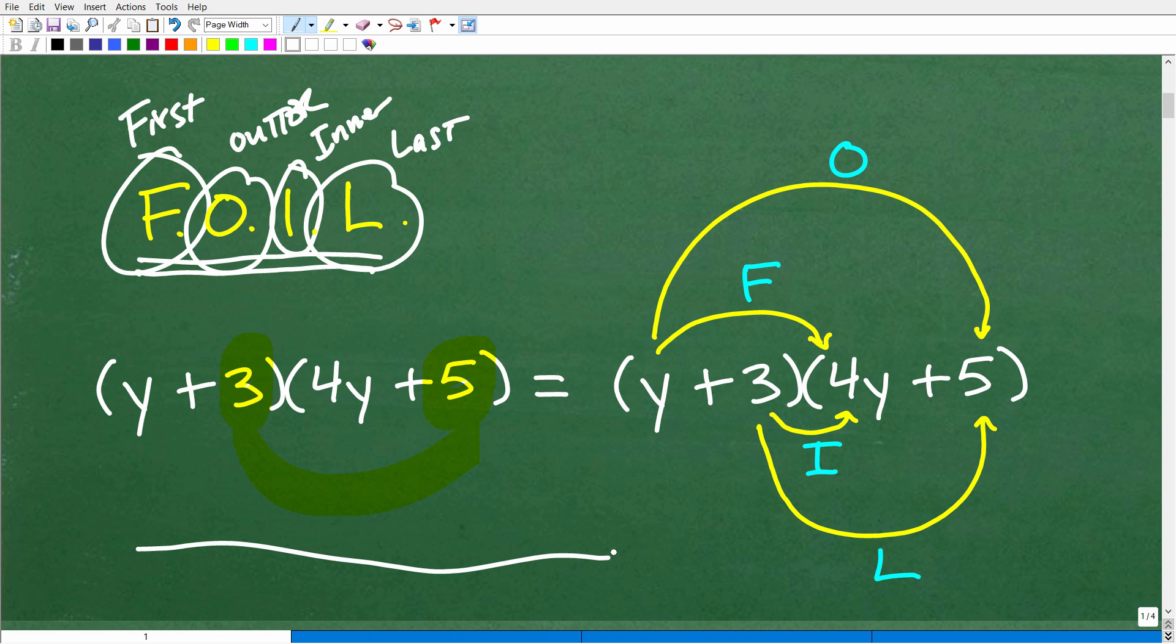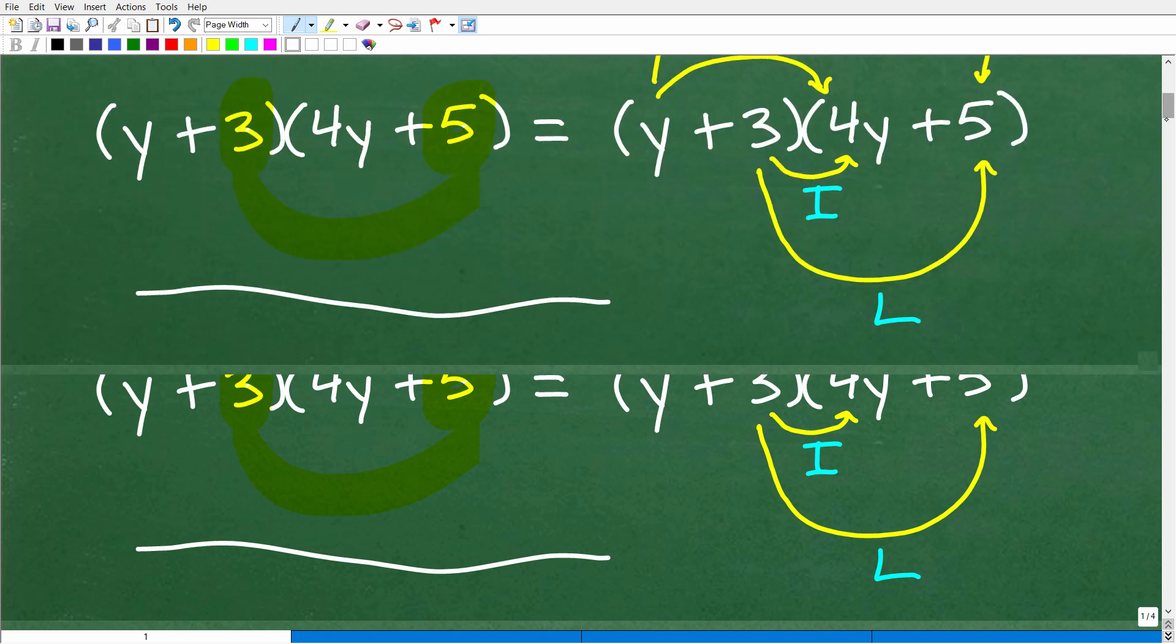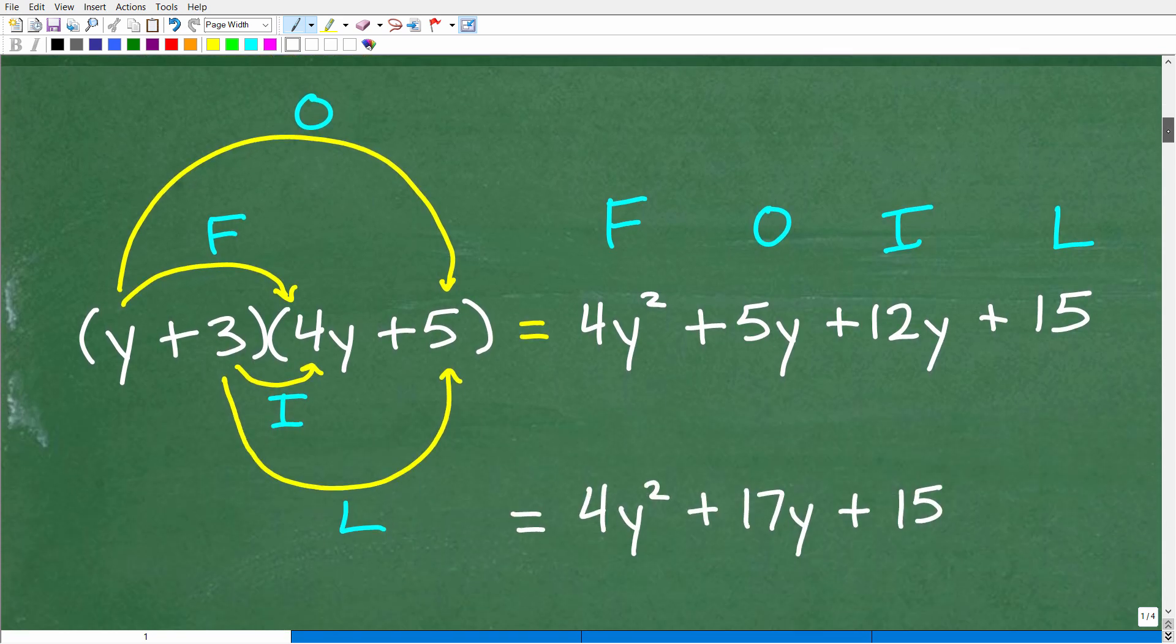So if you're not ready to see the answer, pause the video because I'm going to go through the rest of the solution right now. Okay, so let's get to it. So here is our setup with the FOIL method. So let's see how this works. So we're going to just kind of follow the order, first, outer, inner, last.